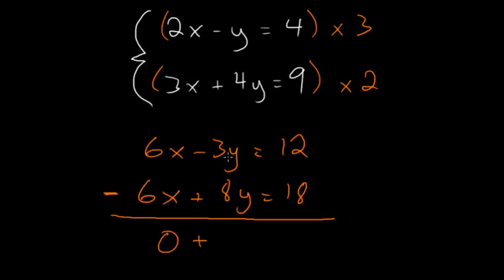So minus 3y minus 8y would be negative 11y. And here we have 12 minus 18 which is minus 6. So solving for y, dividing each side by negative 11, y is equal to 6 over 11.